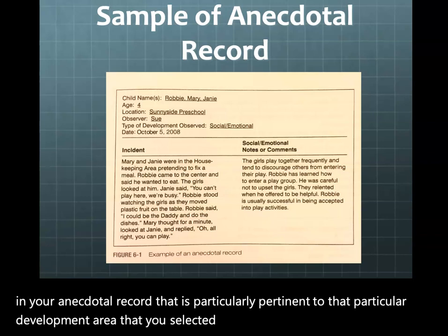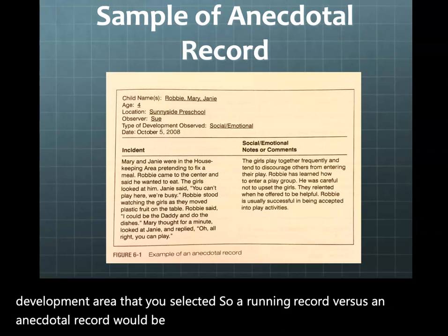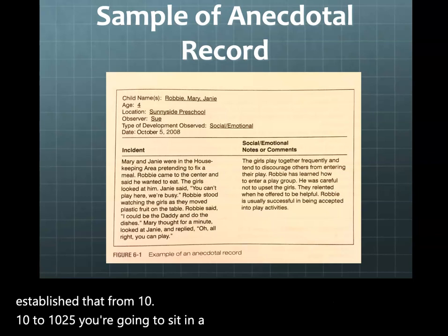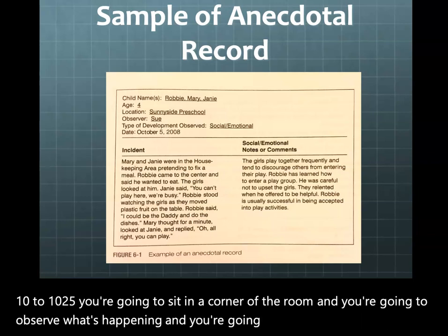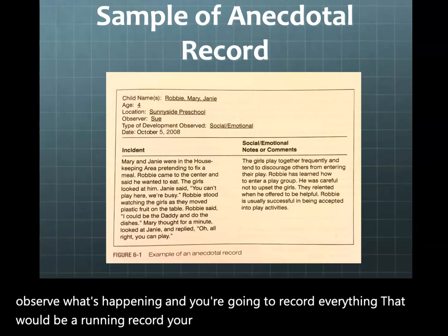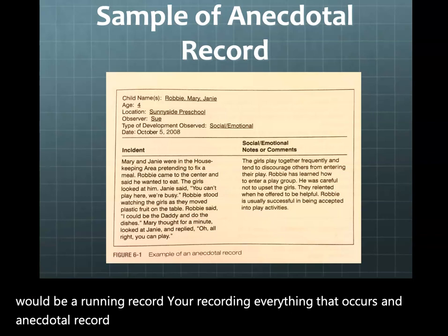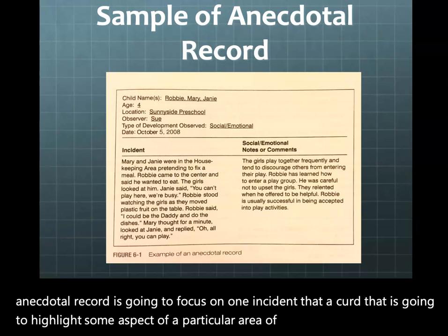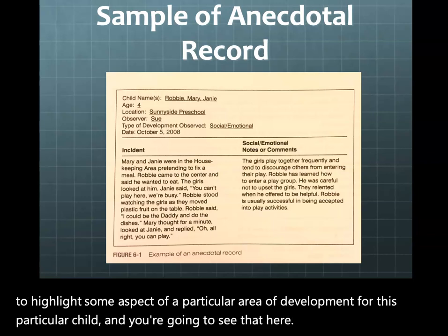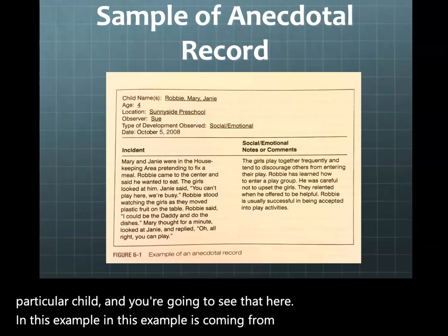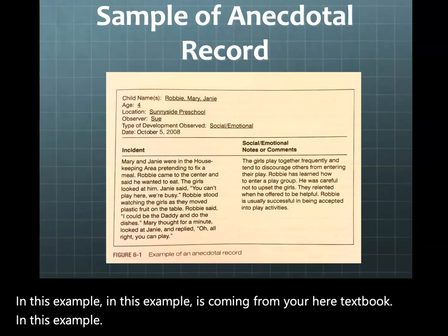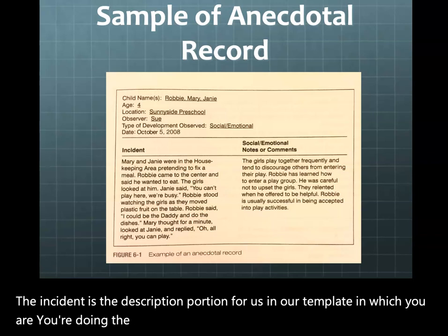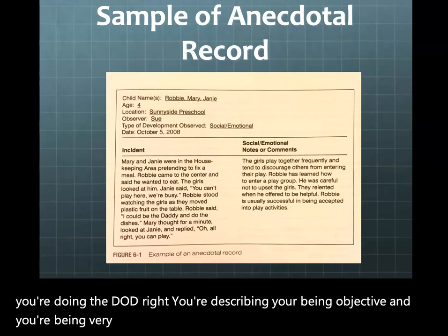A running record is different: you establish a set time — say 10:00 to 10:25 — sit in a corner of the room, and record everything that happens. An anecdotal record focuses on one incident that highlights some aspect of a particular area of development for a particular child. In the example from the textbook, the incident or description portion is where you apply DOD — describing, being objective, and being very detailed in how you narrate what you've seen.